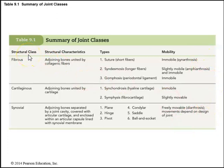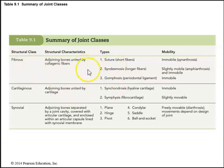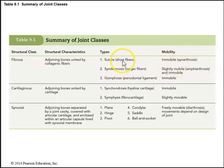The first type of joints we'll discuss are fibrous joints — adjoining bones united by collagenic fibers. There are three types: sutures, syndesmoses, and gomphoses. Sutures have short fibers and are immobile, classified as synarthroses. Sutures within the skull especially are immobile.